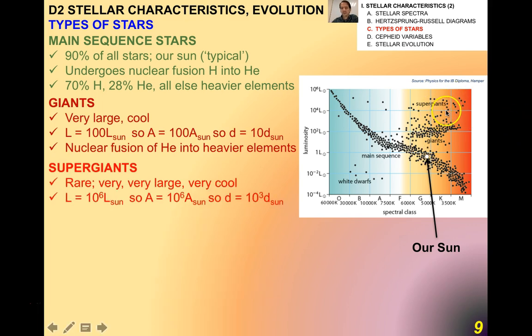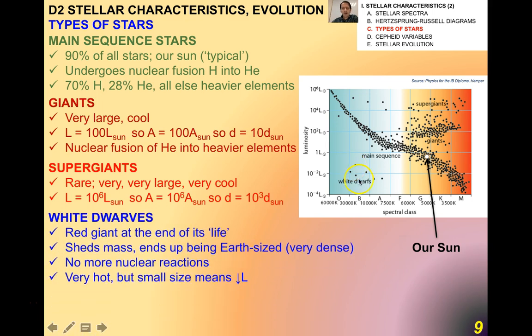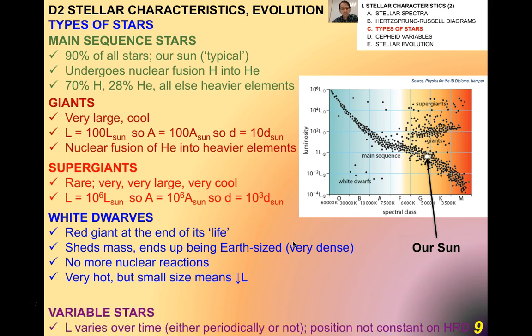Supergiants, which are even further up to the right of the main sequence, are somewhat rare. They're very, very large, huge, and very cool. Their diameters are about 1,000 times the diameter of our sun. On the other end, we have white dwarves. These are red giants at the very end of their lives. White dwarves end up shedding their mass. They end up being about Earth size, but they're obviously extremely dense. They've burned themselves out such that there are no more nuclear reactions in the core. They're very hot, but their small size means they have a very low luminosity.